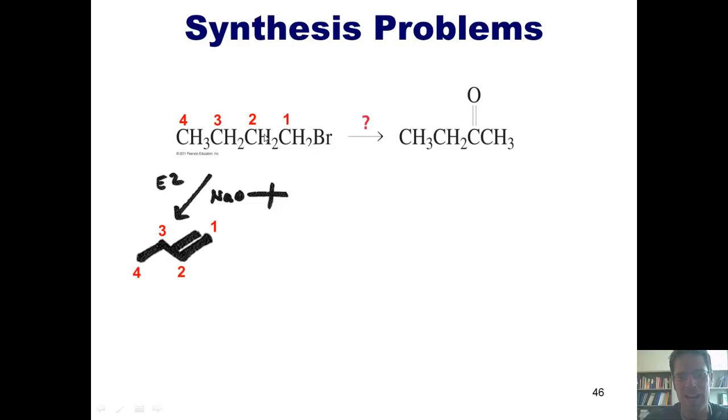This is, of course, formed by grabbing the hydrogen at carbon 2, pumping the electrons down to form a carbon-carbon double bond between 1 and 2 and kicking off the bromide in one fell swoop, E2 style.